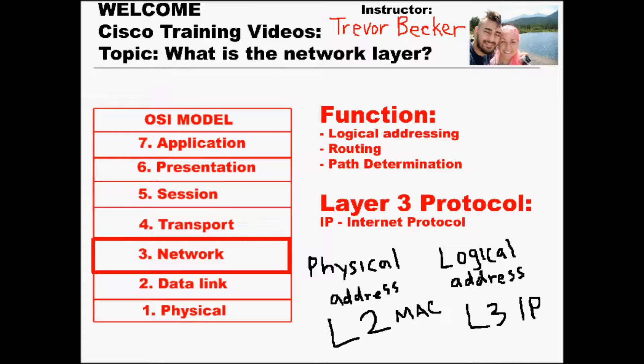Path determination is whenever there are redundant routes in a network, and routing protocols are then utilized to learn and calculate all the possible different route variations that exist in the network. Then the best path is chosen.